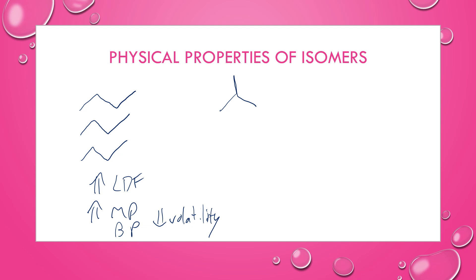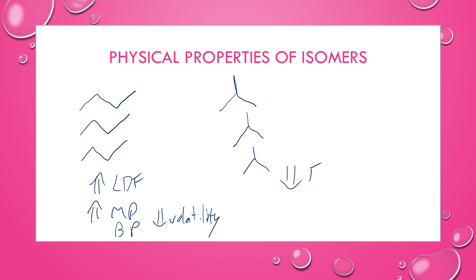The branched chain ones can't line up as well. They also have a more even distribution in their electron cloud, which makes them less polarizable. Because of that, they have weaker London dispersion forces, which gives them lower melting points, lower boiling points, and higher volatility compared to their straight chain structural isomer.